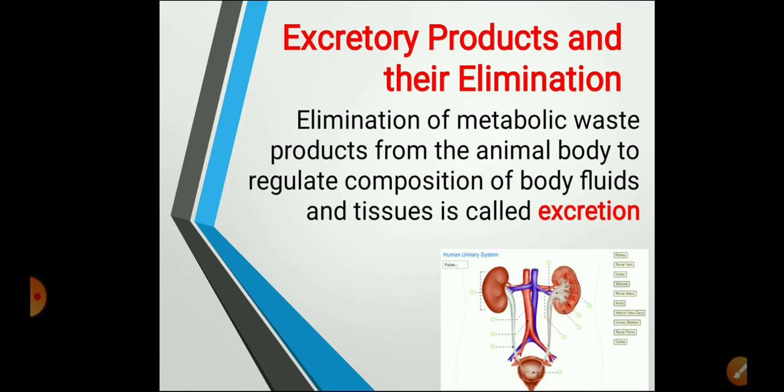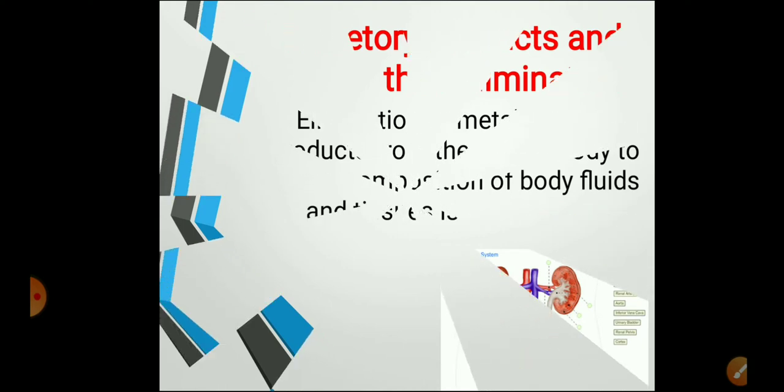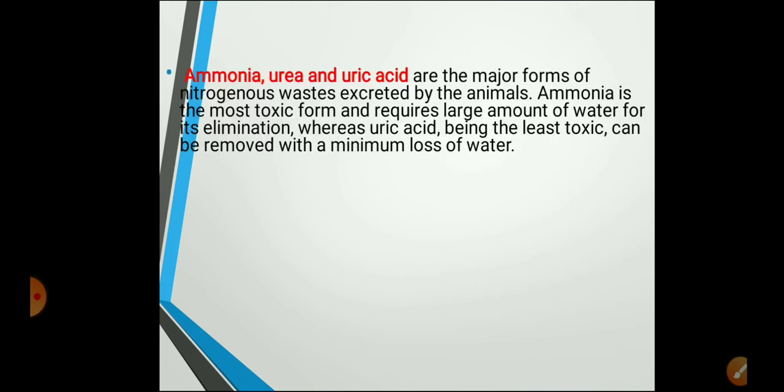Why is excretion necessary? It is necessary to regulate the composition of body fluids. Now, based on the major excretory products, organisms are classified into three different types. The three major nitrogenous waste products formed in our body are ammonia, urea, and uric acid.